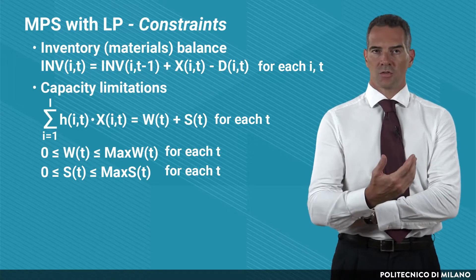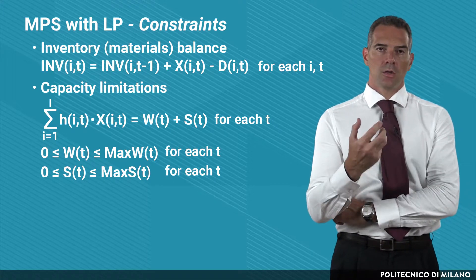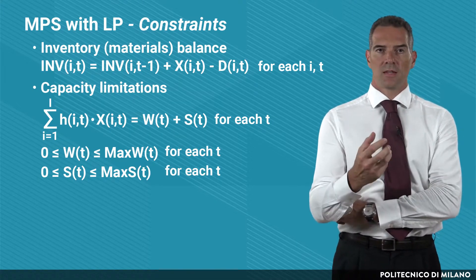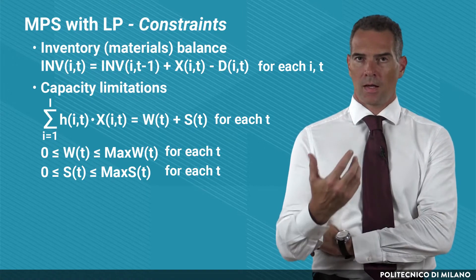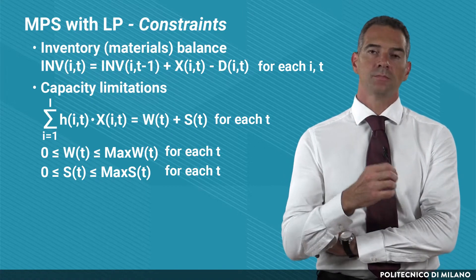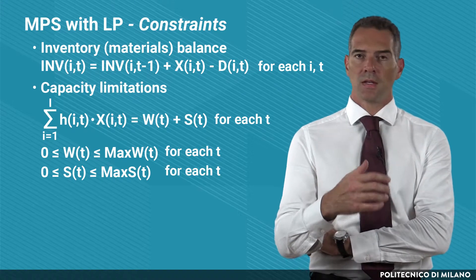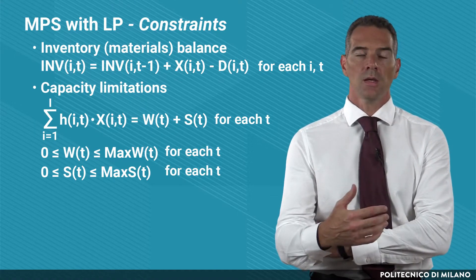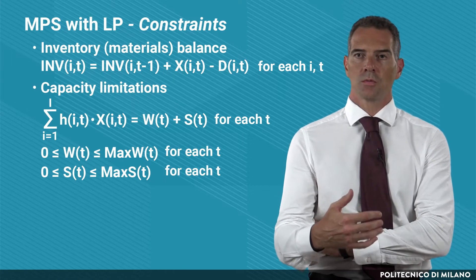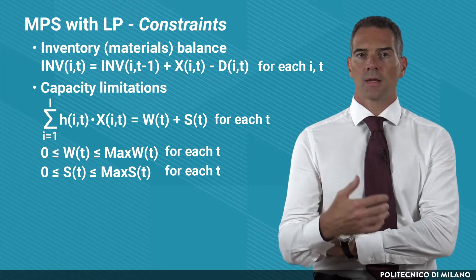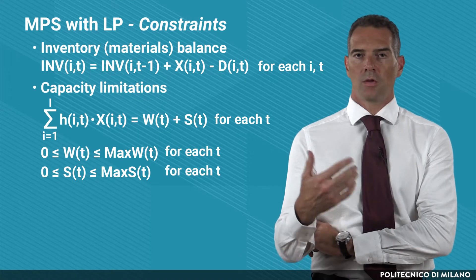Then you also have to express capacity limitation constraints. You multiply the produced quantity X by the unit manufacturing hour time, expressed here by the letter H. The capacity limitation constraint is expressed through a balance equation in which, on one hand, we have the used manufacturing hours — the product of quantity produced times the unit hours needed to produce item i in period t — and on the other hand, the total amount of W and S, the number of hours used both in regular and overtime. Of course, W and S have to be bounded by zero on one side and by the maximum amount of hours on the other.